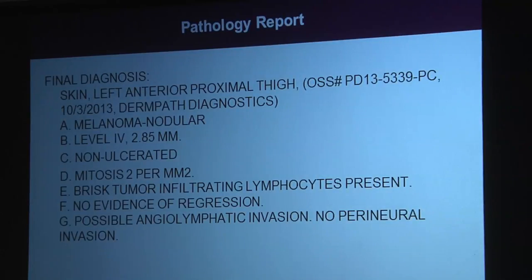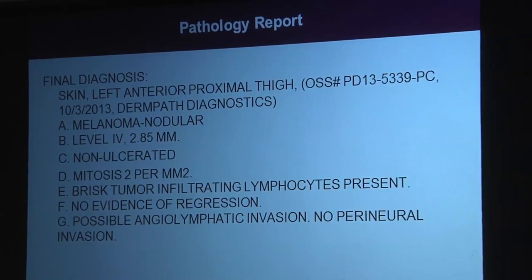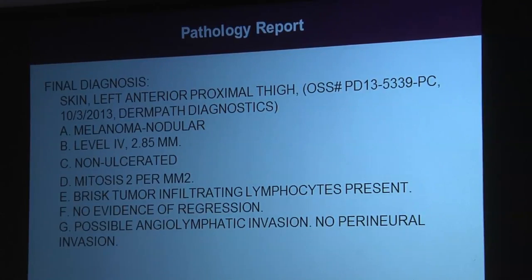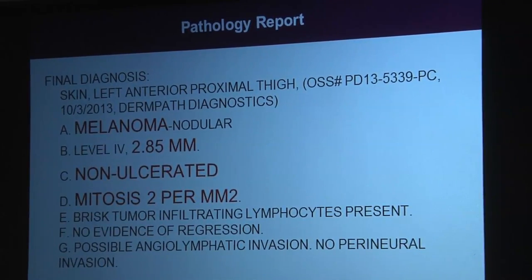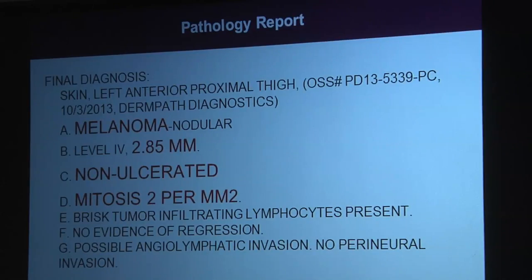This is a very typical pathology report we get back once the pathologist looks at that excisional or punch biopsy. A few things jump out: Is it a melanoma, yes or no? This patient had a melanoma. What is the depth? This one is 2.85 millimeters — intermediate depth. Is it ulcerated or not? Ulceration means the tumor is growing so fast it breaks the overlying skin, indicating a faster-growing, potentially more aggressive tumor. And mitoses — the number of actively dividing cells — if higher, it suggests a faster-growing or more aggressive tumor.